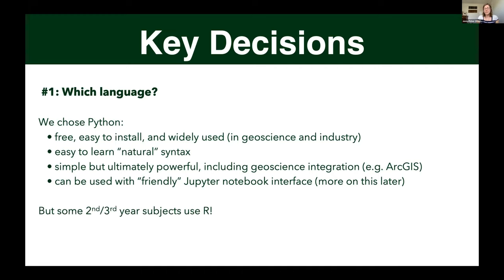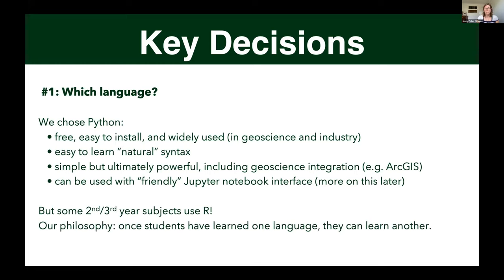Many of our second and third year subjects still use R, so we didn't decide to go whole hog in one direction. This was our starting point, with the philosophy that once students have learned one language in a dedicated way, they can learn another. The more of these languages you learn, the easier it becomes to learn the next one. Having subjects that work in different languages provides a real practical skill — students take that base level knowledge and apply it to something different in a different subject. Although it wasn't initially our intention to do a mixed degree, it's where we've ended up and I actually think it's not a bad thing at all.